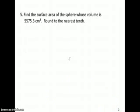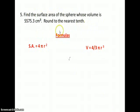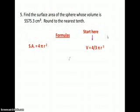Number 5: we're asked to find the surface area of a sphere. The volume is 5,575.3 cubic centimeters, rounded to the nearest tenth. We're going to need the formulas for both surface area and volume, because to find the surface area we need the radius, which we don't have — but we do have the volume, so we'll start there and plug in the given volume to solve for the radius.